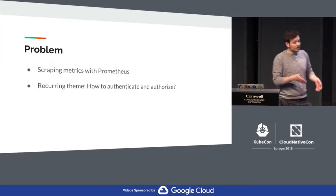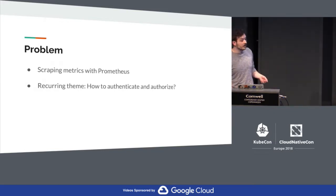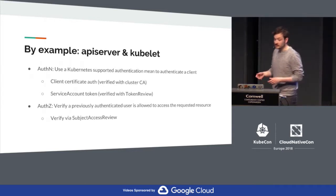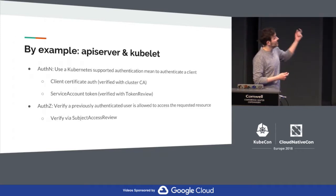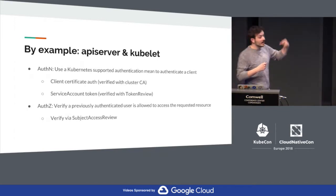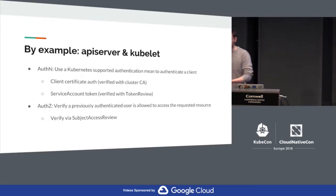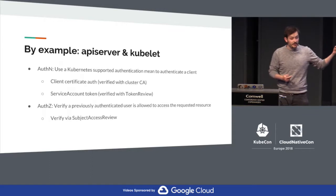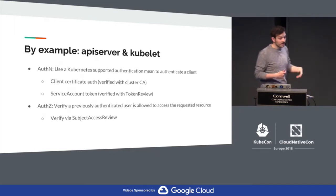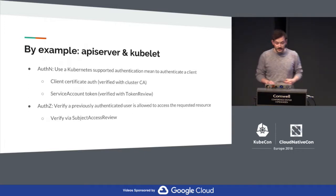So how do we make sure that only Prometheus can access this? We need some sort of authentication and authorization mechanism. I looked at how some of the examples within Kubernetes already do this, and it turns out the API server and the kubelet already do the things that I basically want to copy. The kubelet, whenever Prometheus requests metrics from it, verifies that it's actually Prometheus — that's the authentication part — and it does that by either a client certificate or a service account token. The authorization part is what we all know as RBAC, and the specific API call it does here is called the subject access review.